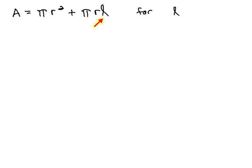First, we need to isolate the term with the l by getting rid of the pi r squared. We get rid of that pi r squared by balancing through the equal sign and subtracting that term off to the other side.